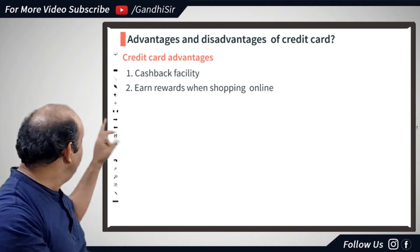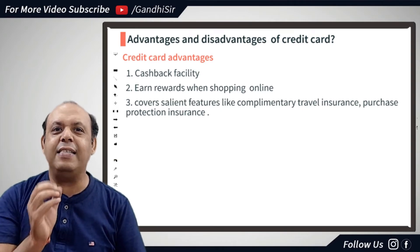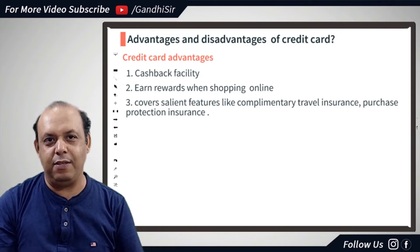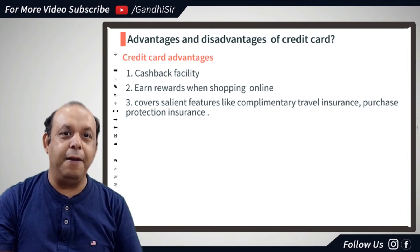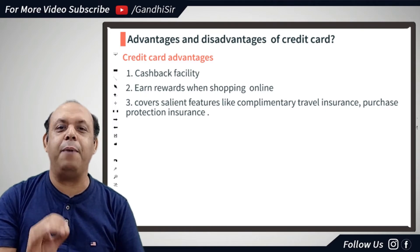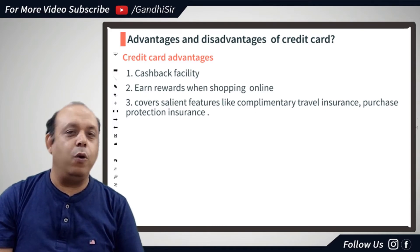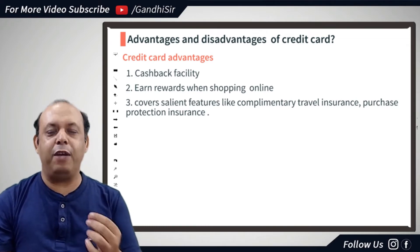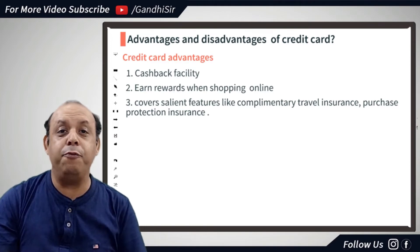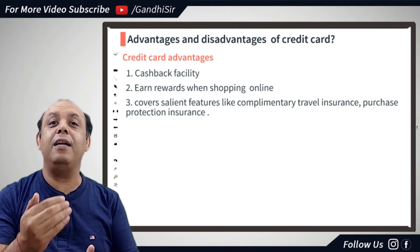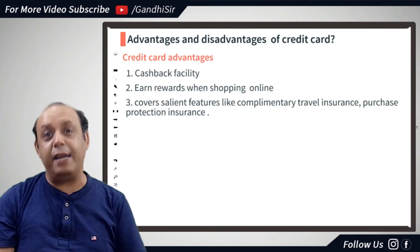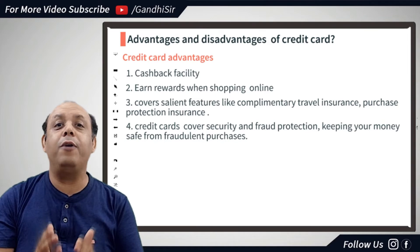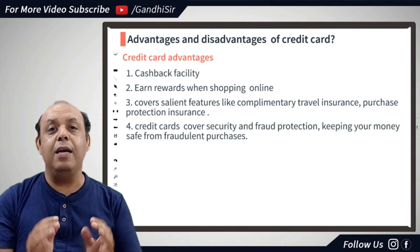The third advantage covers salient — meaning important — features like complimentary travel insurance and purchase protection insurance. Purchase protection insurance is a facility provided by most credit card companies. For example, if you have bought a mobile phone worth 40,000 or 50,000 rupees, it is covered under insurance. So this is a useful facility provided to credit card owners.